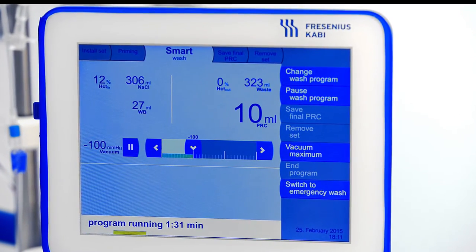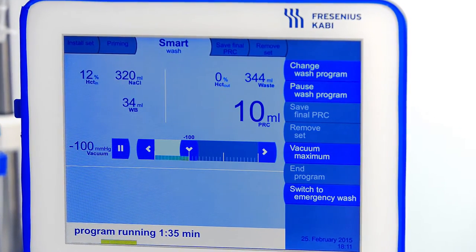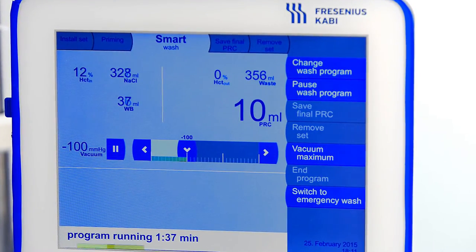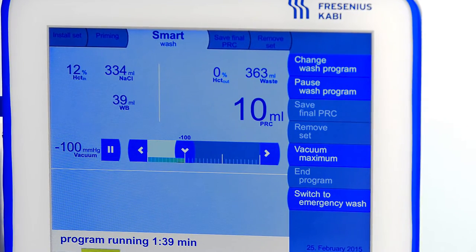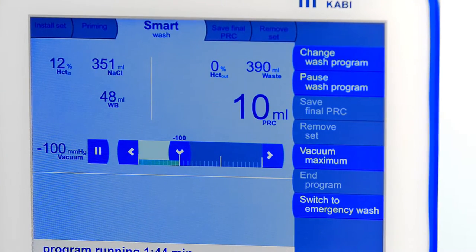Volumes of all blood liquids can be monitored at the touch screen during processing, such as incoming hematocrit, outgoing hematocrit, saline volume, waste volume, and final packed red cells volume.